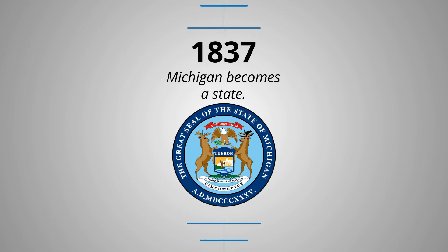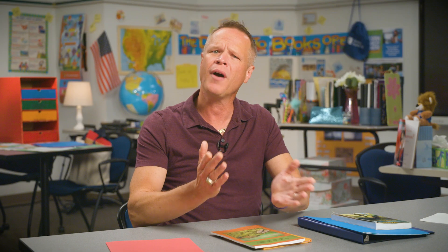In 1837, Michigan became a state. In the present day, Michigan and Ohio have friendly sport rivalries, but long gone are any border disputes.